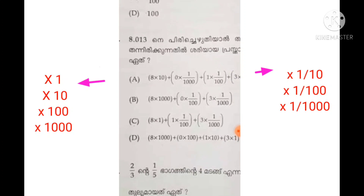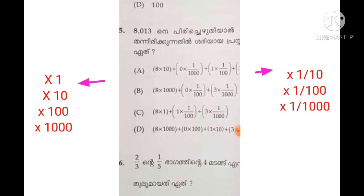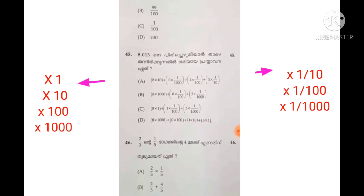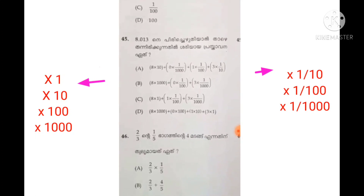This is the place. We divide the number one by one. Then we multiply one by 10, zero by one by ten. The rest is 1 into 1 by 100, plus 3 into 1 by 1000. The answer is option C.